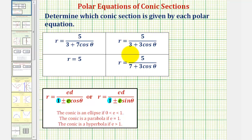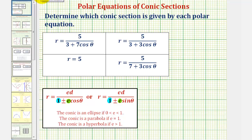For three of these equations, we'll focus on making the leading constant in the denominator equal to one. Notice how the equation r equals five doesn't fit this standard form, so we need to recognize that when r equals five — the radius equals five — we have a circle. For all circles, the eccentricity is equal to zero.